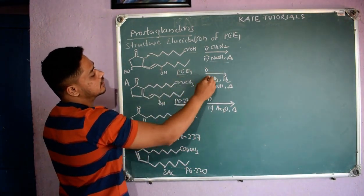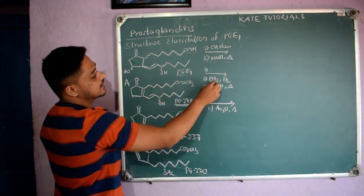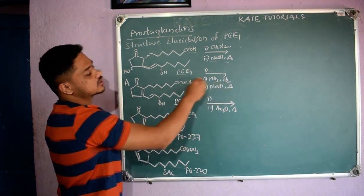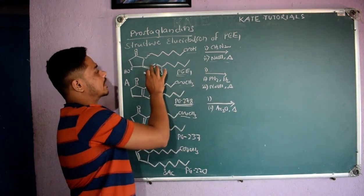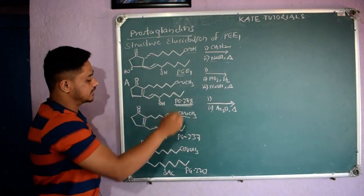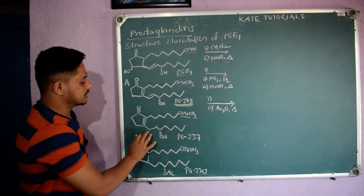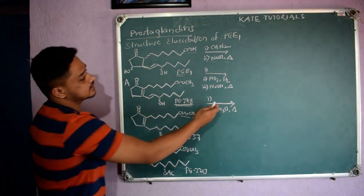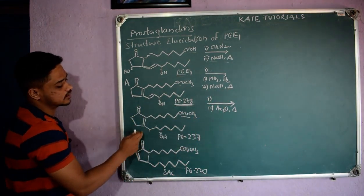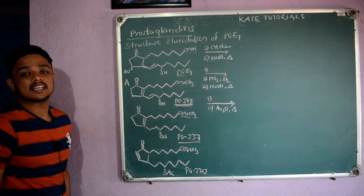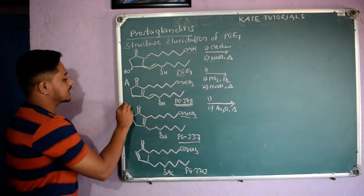For the second reaction, I took PGE1, added CH₂N₂ to get the ester. In the second step I added hydrogen in the presence of platinum — so this pi bond became a sigma bond because addition of hydrogen took place. In the third step, under heating conditions, I got compound B, which is PG237.